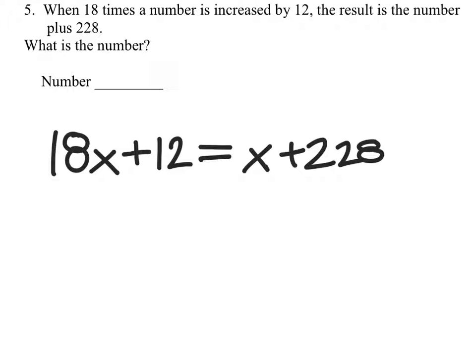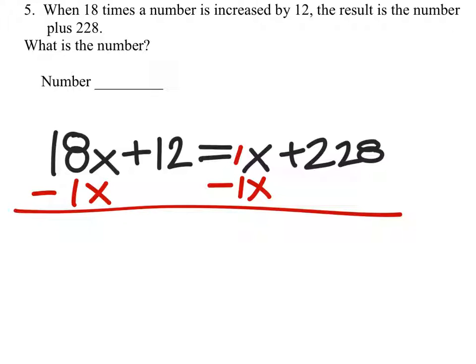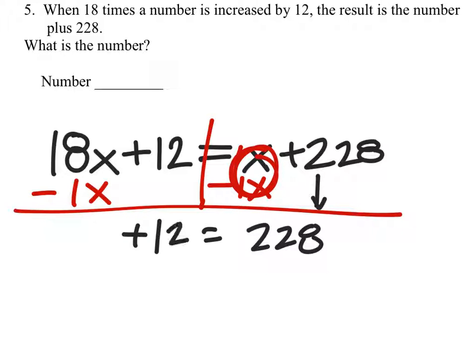Now we'll use the principles of equality to solve this one. So we've got to decide which side we want the x's on. I'd say let's put them on the left because there's more of them on the left. So I'm going to subtract, and we would say that's a 1x. So I'll subtract a 1x here as well. That becomes a 0, and I still have this 228 and the plus 12. But 18 minus 1 would be a 17x.